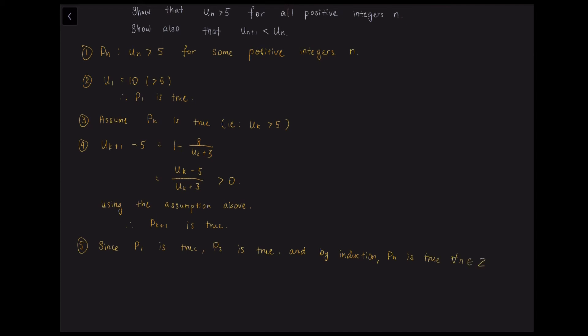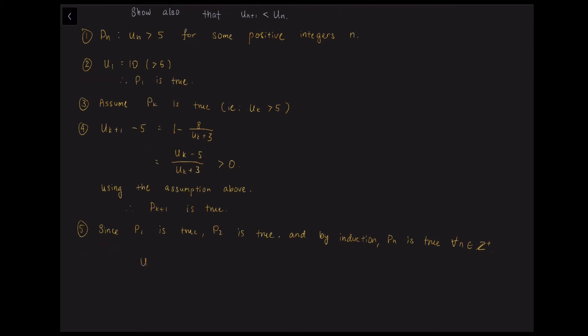So for the second part of the question, it wants us to show that un plus 1 is smaller than un. So since it must be smaller, we know that un plus 1 minus un must be negative.